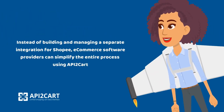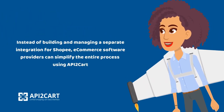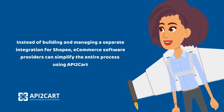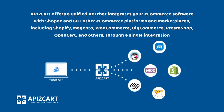Instead of building and managing a separate integration for Shopee, e-commerce software providers can simplify the entire process using API2Cart. API2Cart offers a unified API that integrates your e-commerce software with Shopee and 60-plus other e-commerce platforms and marketplaces, including Shopify, Magento, WooCommerce, BigCommerce, PrestaShop, OpenCart, and others, through a single integration.